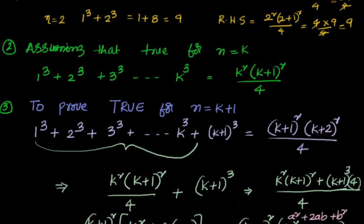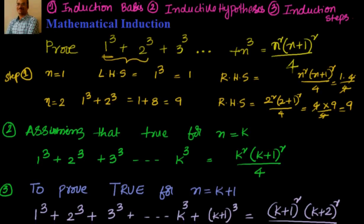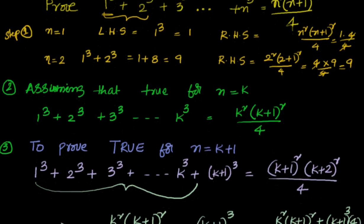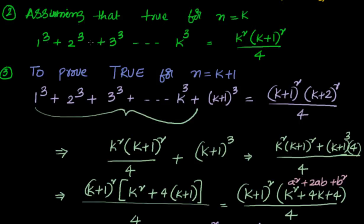Since we have proven it's true for n=k+1, we have proven the statement is true for any value of n. To summarize: we proved 1³ + 2³ + ... + n³ = n²(n+1)²/4 in three steps. Step 1: prove true for n=1 (LHS = RHS). Step 2: assume true for n=k — the inductive hypothesis: 1³ + 2³ + ... + k³ = k²(k+1)²/4.